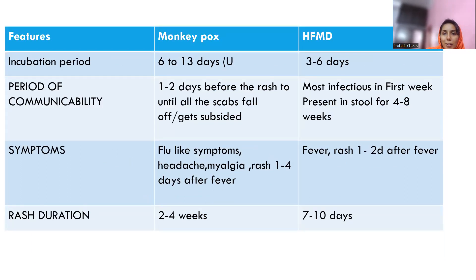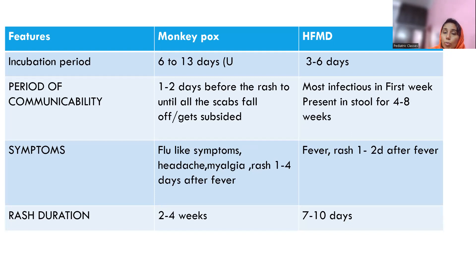The incubation period of monkeypox is 6 to 13 days and can range up to 21 days. For hand foot mouth disease it is generally 3 to 6 days. The period of communicability for monkeypox is one to two days before onset of rash until all scabs have fallen off, whereas hand foot mouth disease is most infectious in the first week but the virus can be found in stool for up to four to six weeks. Symptoms of monkeypox start with a prodrome — flu-like symptoms, headache, myalgia — and rash appears one to four days after fever. Hand foot mouth disease also starts with fever and sore throat, but rash comes one to two days after fever.